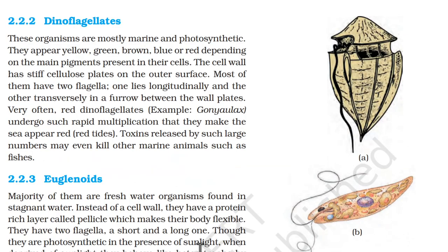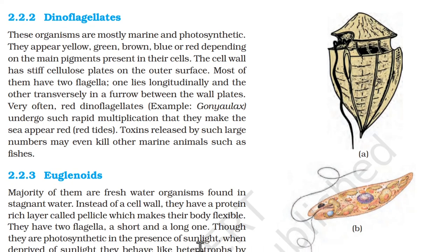2.2.2 Dinoflagellates. These organisms are mostly marine and photosynthetic. They appear yellow, green, brown, blue, or red depending on the main pigments present in their cells. The cell wall has stiff cellulose plates on the outer surface. Most of them have two flagella — one lies longitudinally and the other transversely in a furrow between the wall plates. Very often, red dinoflagellates such as Gonyaulax undergo such rapid multiplication that they make the sea appear red, known as red tides. Toxins released by such large numbers may even kill other marine animals such as fish.